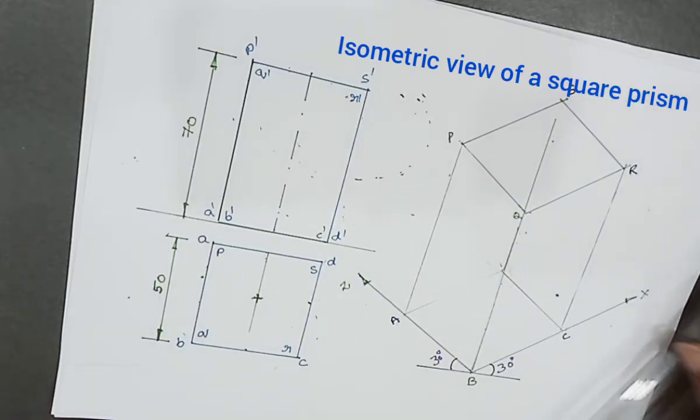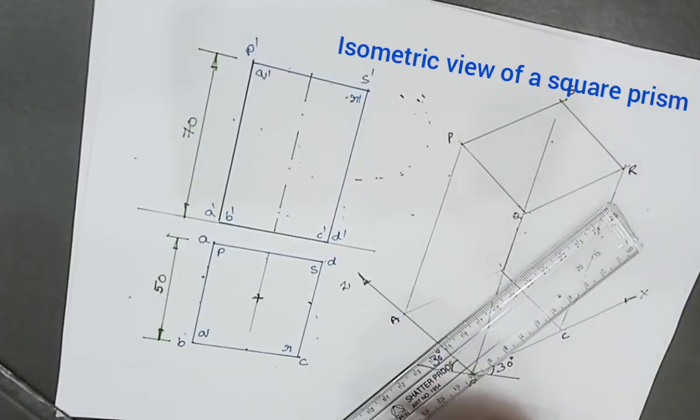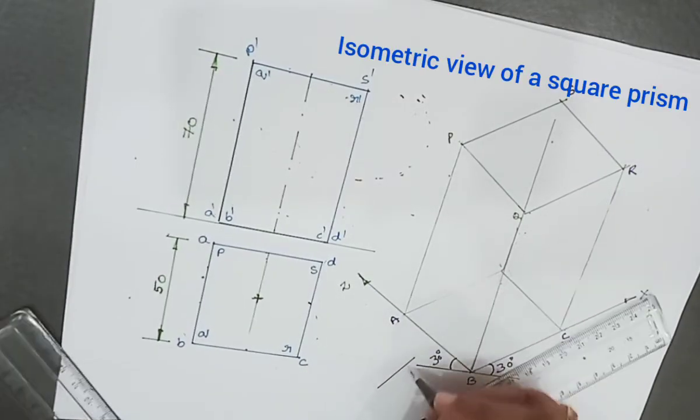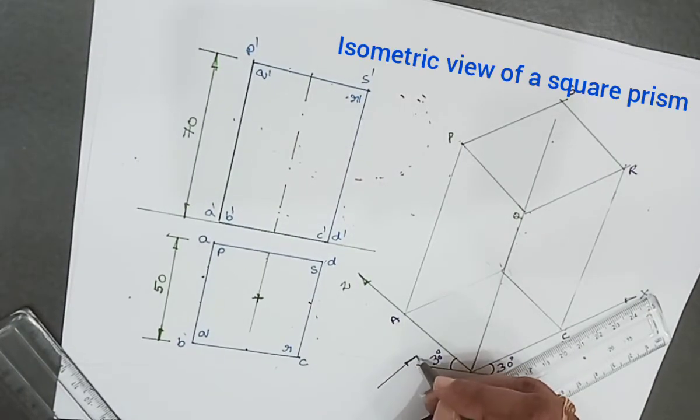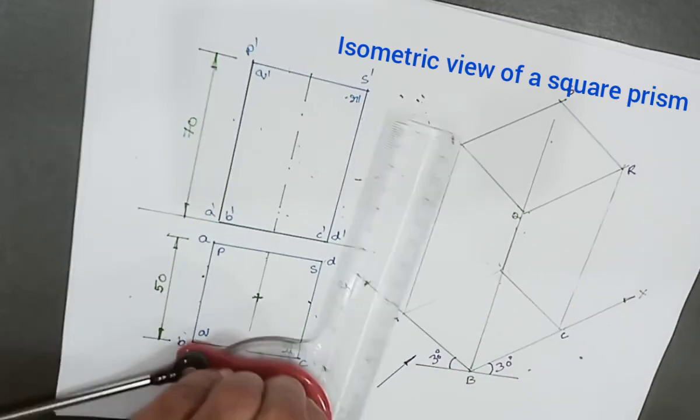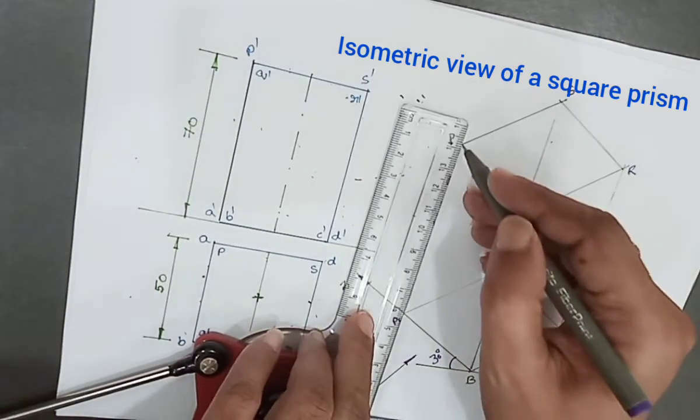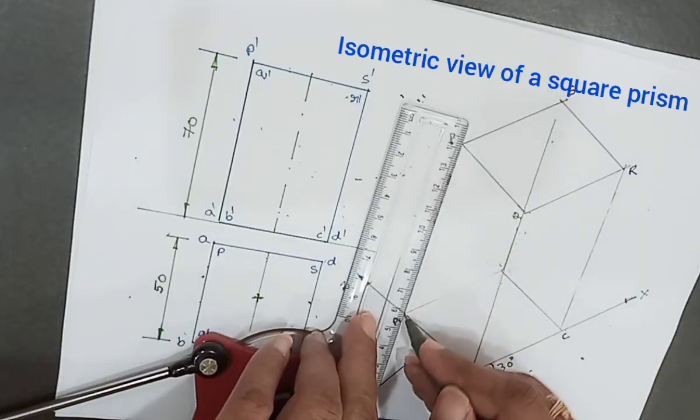Now the observer is looking in this direction. Then we'll darken the required lines. This face edge is fully visible.